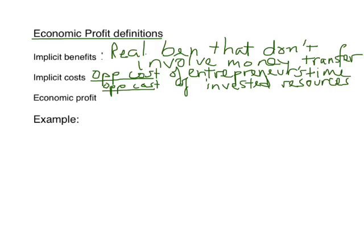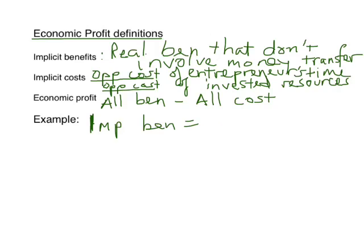Economic profit is defined as all benefits — both explicit and implicit — minus all costs, both explicit and implicit. Let's suppose that Lisa would give up $5,000 a year to make coffee and bake goods rather than run the care facility. So implicit benefits equal $5,000 per year.